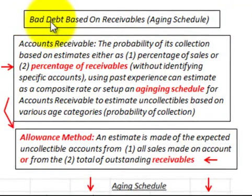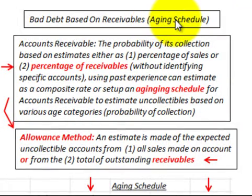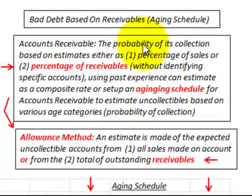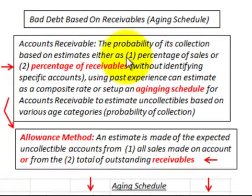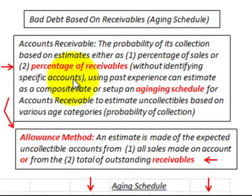Here we're going to be looking at bad debt or uncollectible debt based on receivables, and we're going to be setting up and using an aging schedule to determine the bad debt. We're going to be looking at accounts receivable and determining the probability of collection based on estimates. You can do it as a percentage of sales or a percentage of receivables — in this case we're going to do it as a percentage of receivables without identifying any specific accounts.